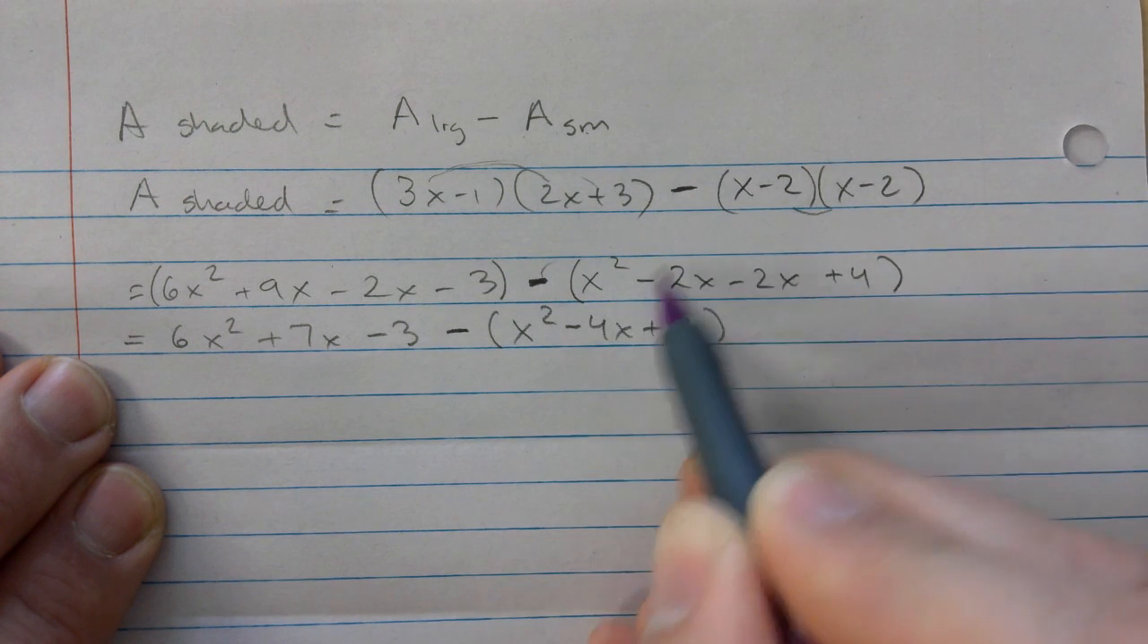Minus, okay? x squared minus 2x minus 2x again plus 4. Clean it up before you do anything. 6x squared, this gives you plus 7x minus 3, minus - this minus is going to apply everything in there, but we're first going to clean it up as well. x squared minus 4x plus 4. It's easier if you clean this up into just a trinomial. And then you get 6x squared plus 7x minus 3 minus x squared plus 4x. Kudos, a lot of you got this right on the test. You have to distribute this along the whole thing.